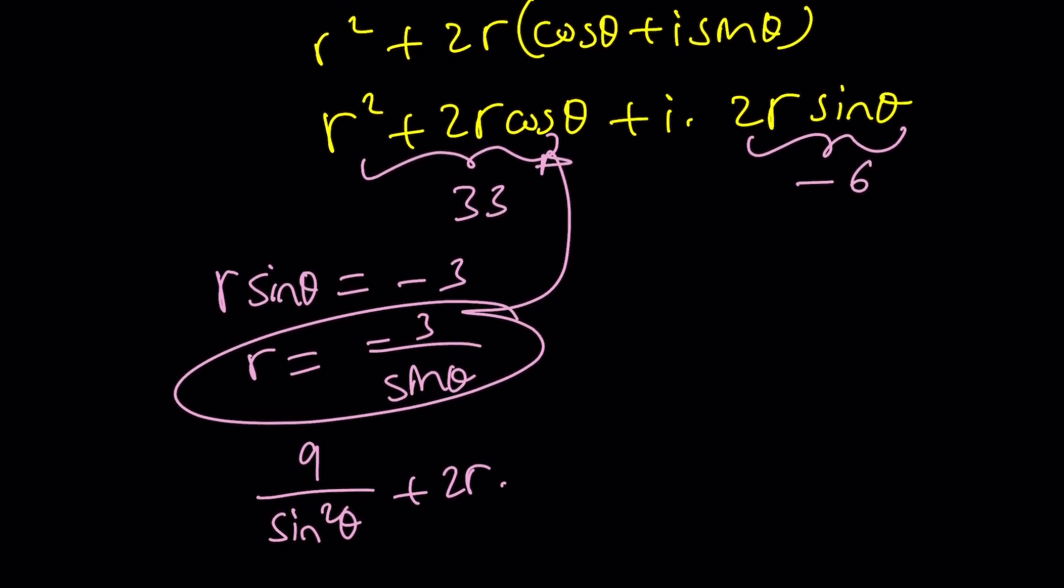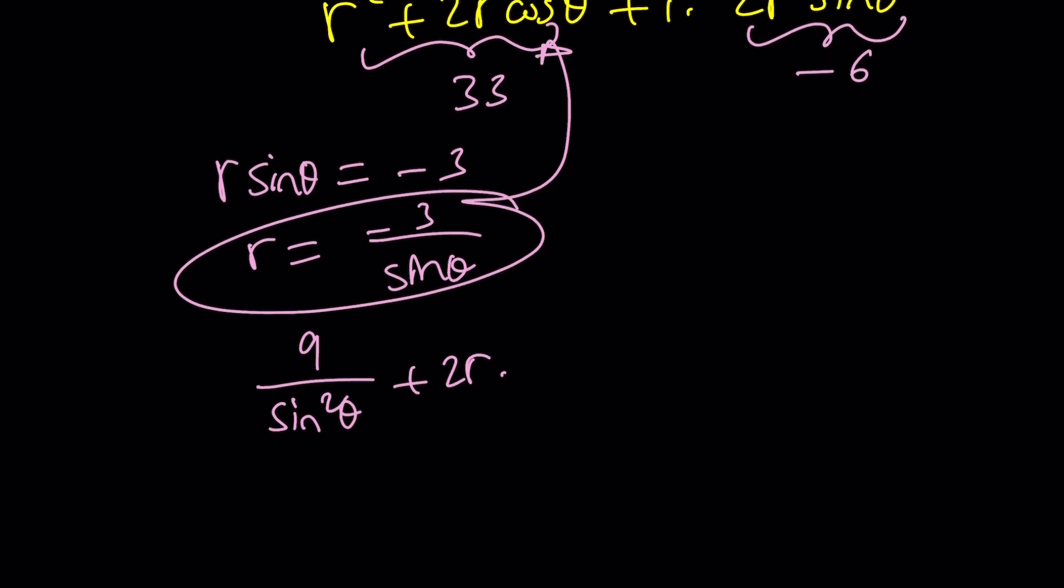Let me see. You know what, I probably—no, I don't need cosine. I'm gonna go ahead and replace r with—that's what I was supposed to do anyways, right—r with this, negative 3 over sine θ, and then multiply by cosine θ. Here we go, and that's equal to 33.